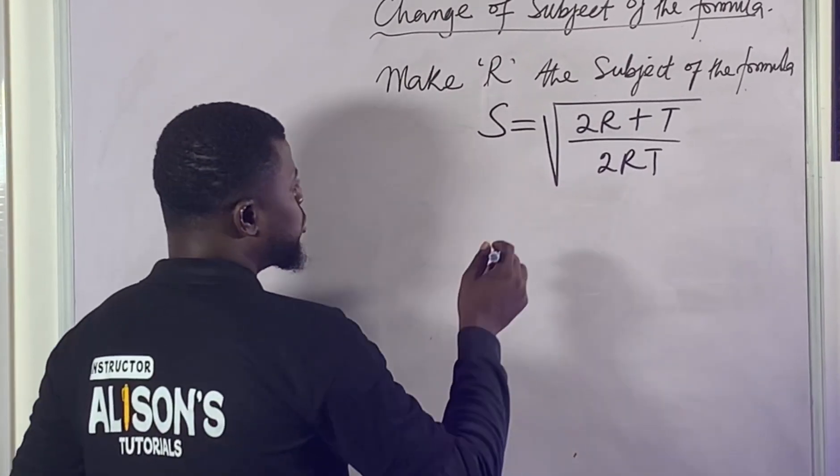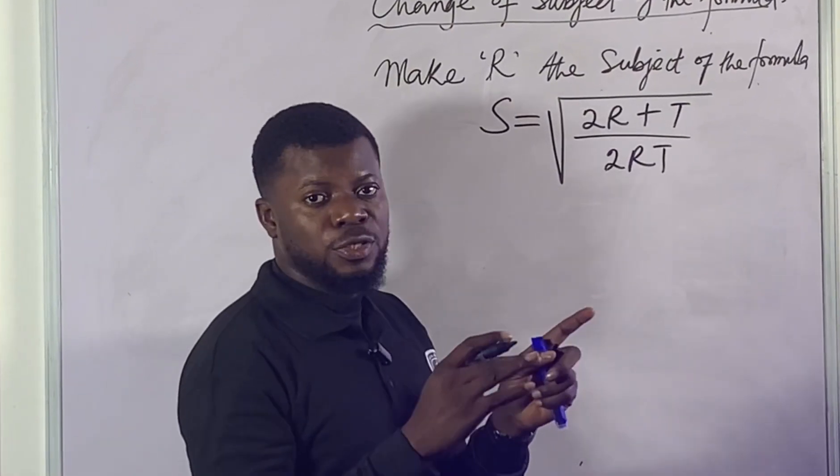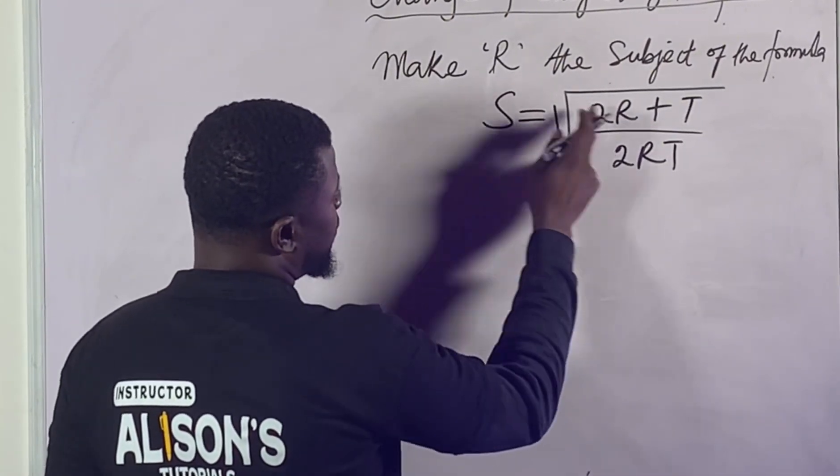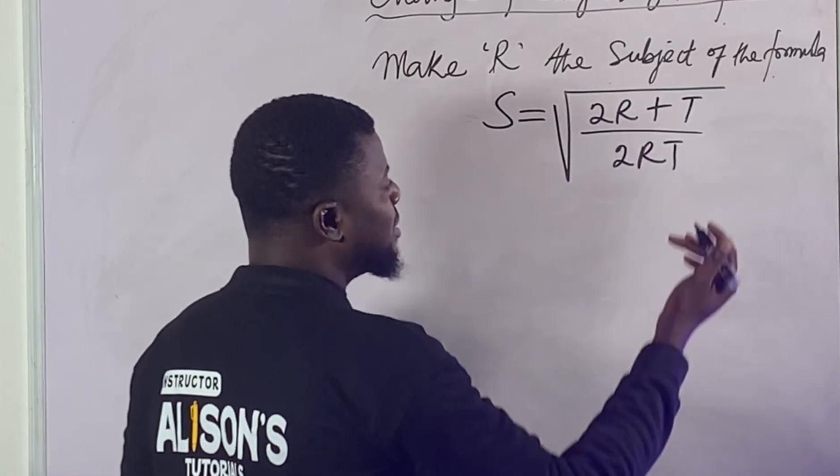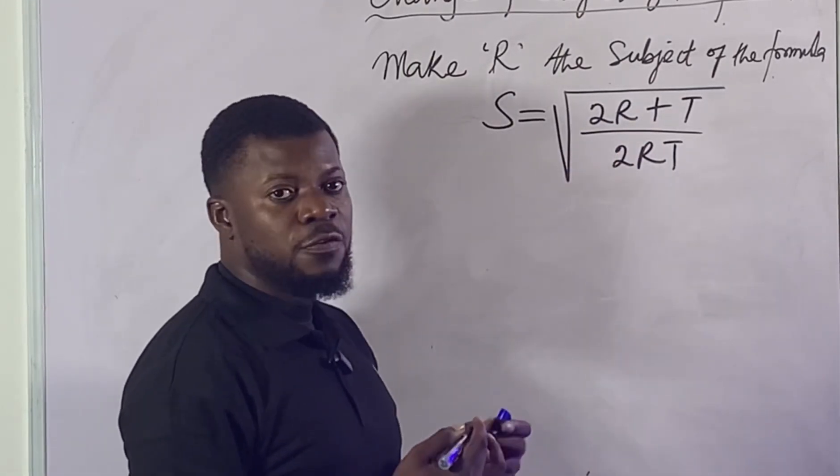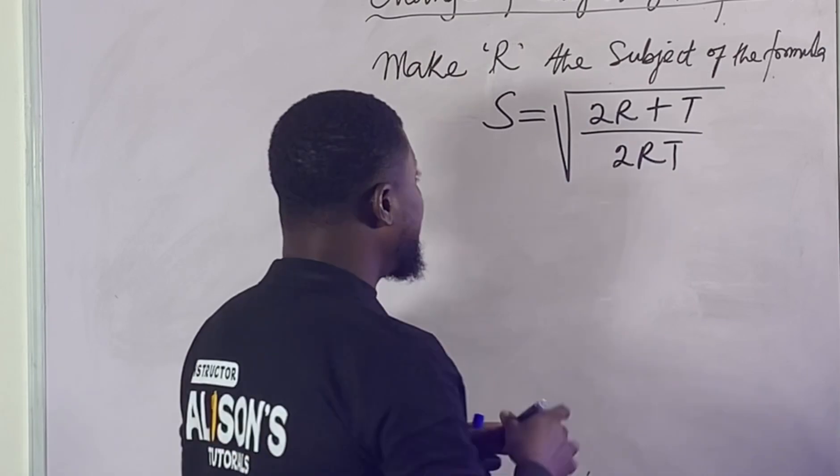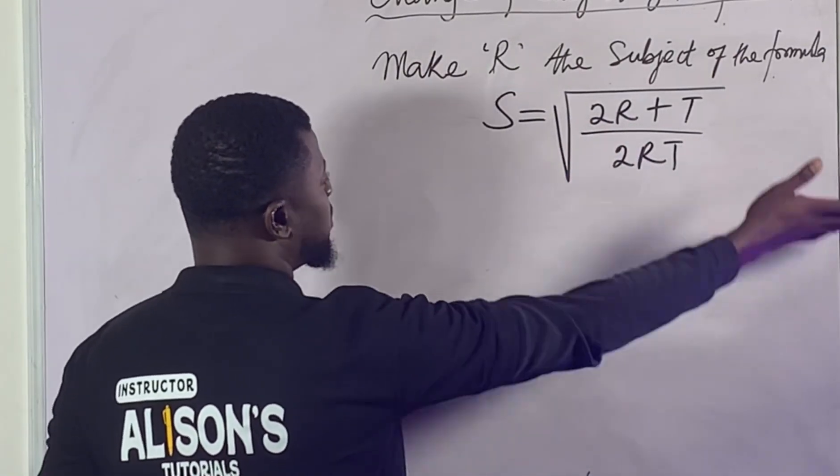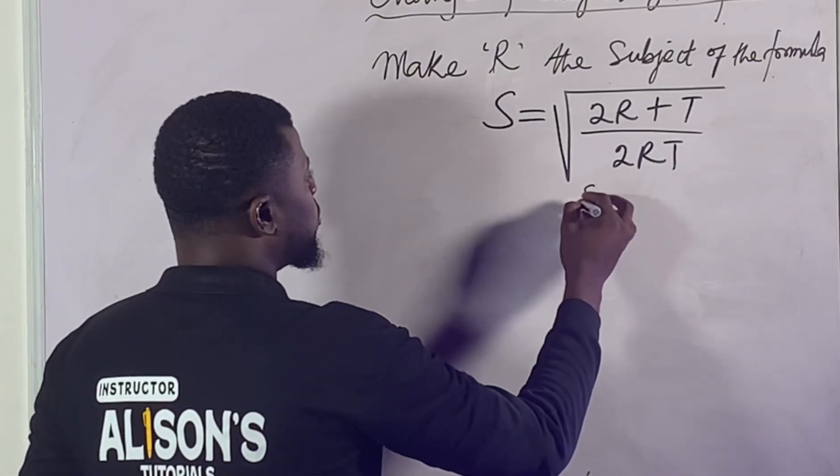Let's keep this simple. The first thing we need to do - there's no specific rule, but I want to guide you here. When you see square roots, remember we're looking for this R, and this R we can't get it out of this square root if we don't remove this square root first. Best way to remove the square root is to make sure we take the square of both sides of the equation.